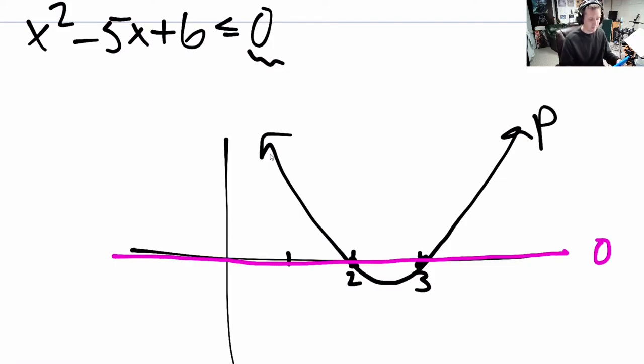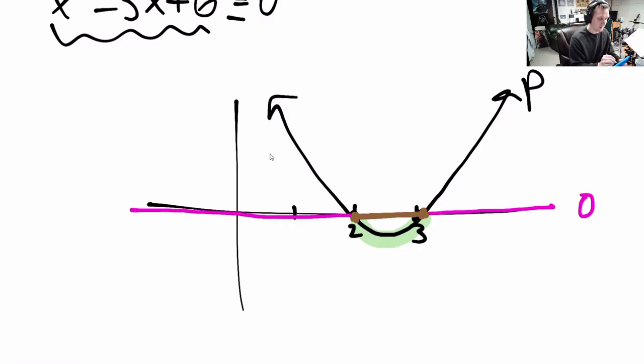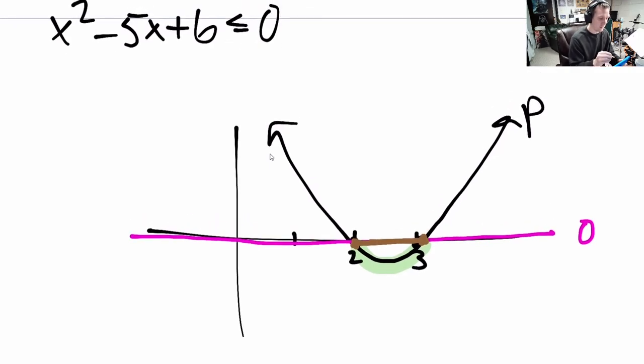So our question is where is our parabola p, for which x's is our parabola p smaller than or equal to our constant height 0 line. I think if we highlight it, we're looking here. So what x values make that true? In brown, this one makes them equal, this one makes them equal, and everything in between makes the parabola p smaller than 0. So we factored this earlier so we know the exact solution is any x in 2 to 3. There you have it.